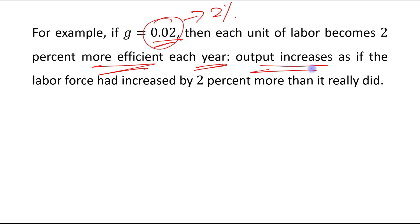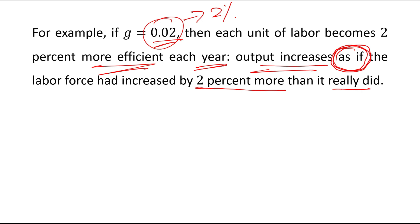Output increases as if the labor had increased by 2% more than it really did. The actual number of workers remains the same, but the effective number of workers has increased, which leads to an increase in output.